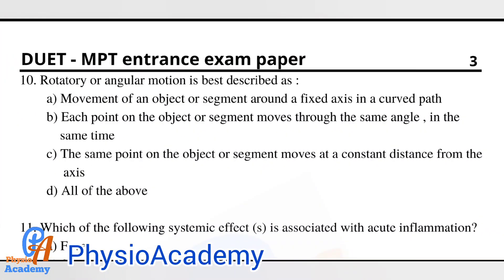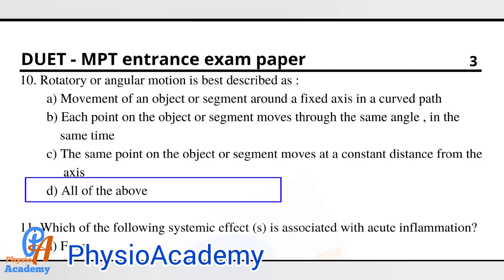Question number ten: rotatory or angular motion is best described as option A: movement of an object or segment around a fixed axis in a curved path. Option B: each point on the object or segment moves through the same angle in the same time. Option C: the same point on the object or segment moves at a constant distance from the axis. Option D: all of the above. The correct answer is option D: all of the above.